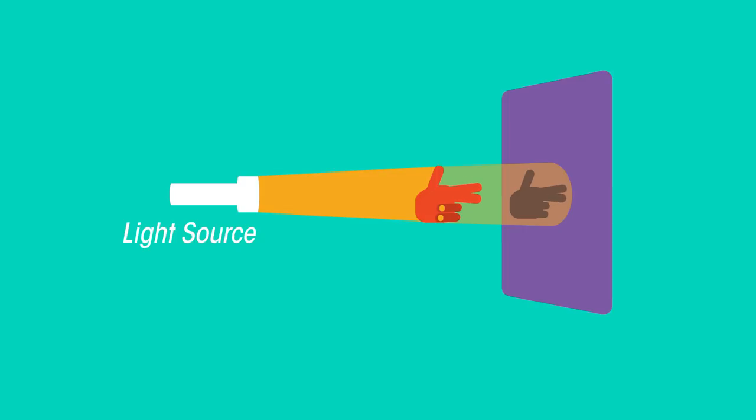Think of shadow puppets. If the light is closer to your hands, the shadow becomes bigger.